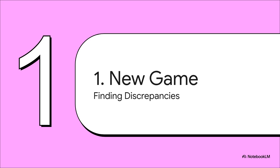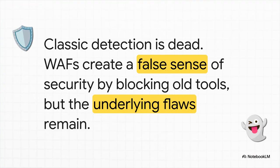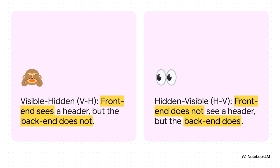For years, it felt like request smuggling was a solved problem. Turns out, that was just an illusion. The classic detection methods are basically dead thanks to WAFs. WAFs got pretty good at spotting the obvious stuff — they just use simple rules to block any request with both a content length and a transfer encoding header, and this has created a false sense of security. The servers haven't been fixed; we've just broken our old tools. The flaws are still lurking under the surface.